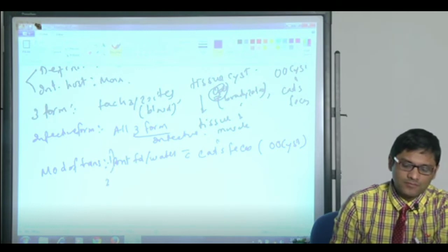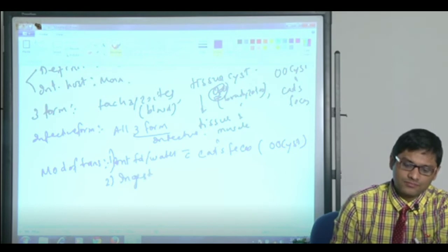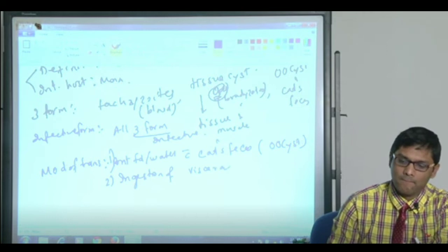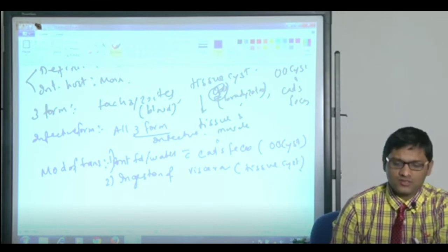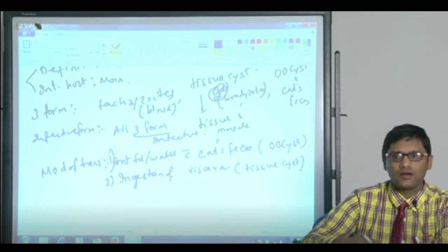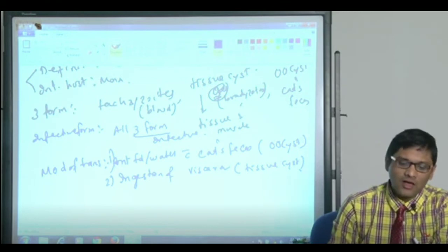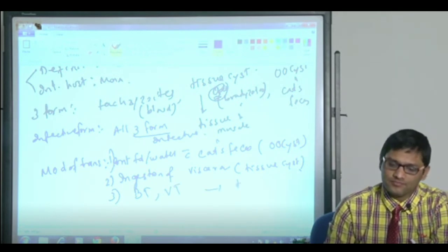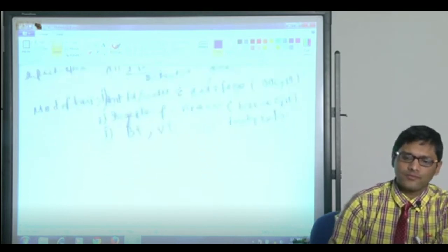Second is ingestion of viscera containing tissue cyst. Of course, cat we do not eat, but there are so many other feline animals which may be eaten. So viscera containing tissue cyst. Next is blood transmission or vertical transmission where tachyzoites are the infective form.